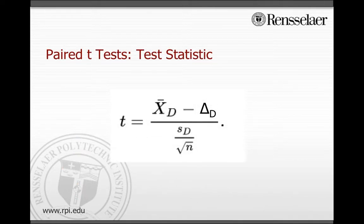The test statistic is calculated using this formula, where d̄ is the sample average of the differences, and Δ₀ is the same as from the hypotheses. s_d is the sample standard deviation of the differences, not the data points themselves, but the differences between the data points. And n is the sample size.